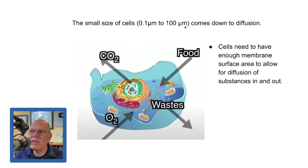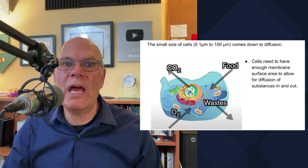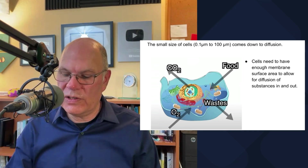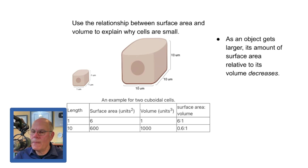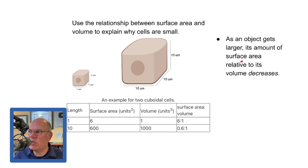It all comes down to diffusion. The basic idea is that cells need to have enough membrane surface area to allow for diffusion of substances in and out. The issue of having sufficient membrane surface area is all about cell size. As an object gets larger, its amount of surface area relative to its volume decreases — we're talking about the relationship between surface area and volume.